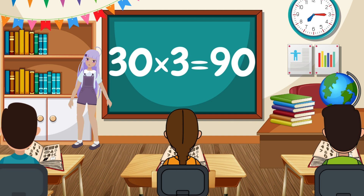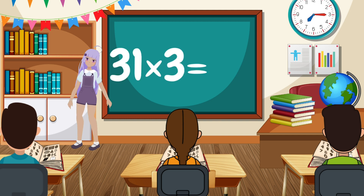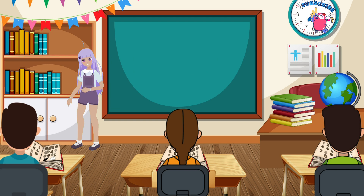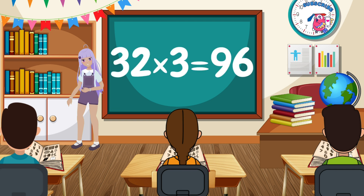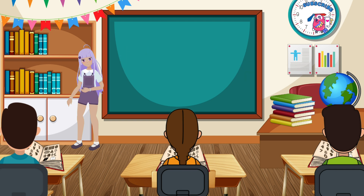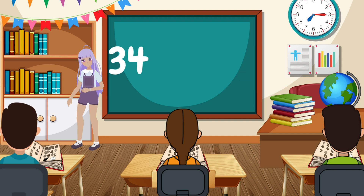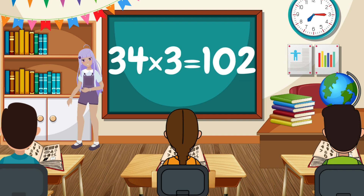31 x 3 equals 93. 32 x 3 equals 96. 33 x 3 equals 99. 34 x 3 equals 102.